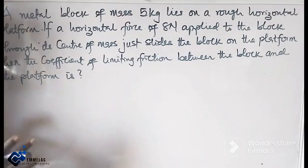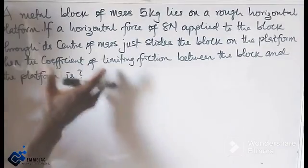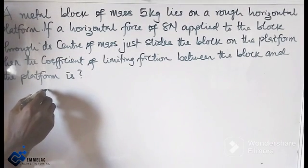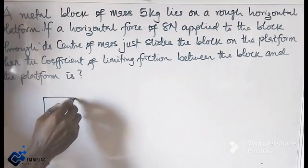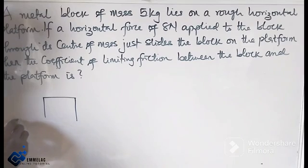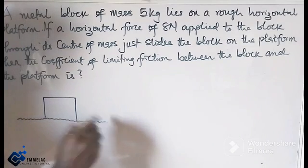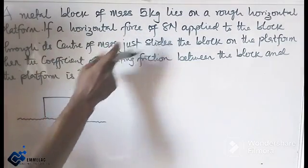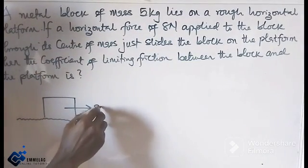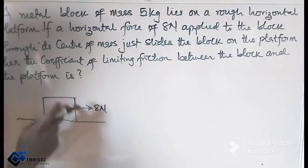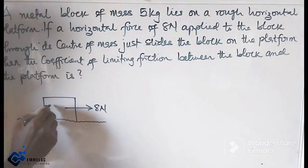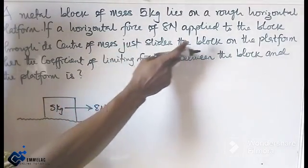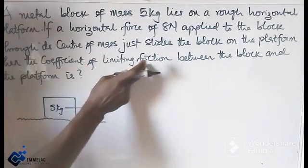then the coefficient of limiting friction between the block and the platform is. Now for us to solve this let us picture out or let us give a pictorial diagram of the question. Now from here we have a diagram. This is the block and it says on a rough surface. Now if a horizontal force of 8 N is applied to the block. Now take note that the mass of this is 5 kg. Now center and just slide the block on the platform. Then the coefficient of limiting friction.